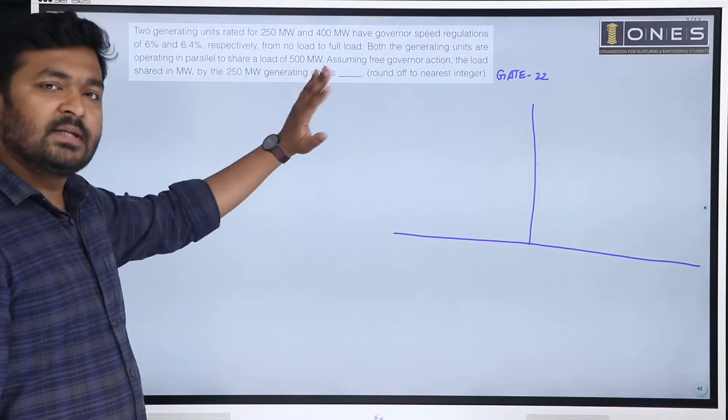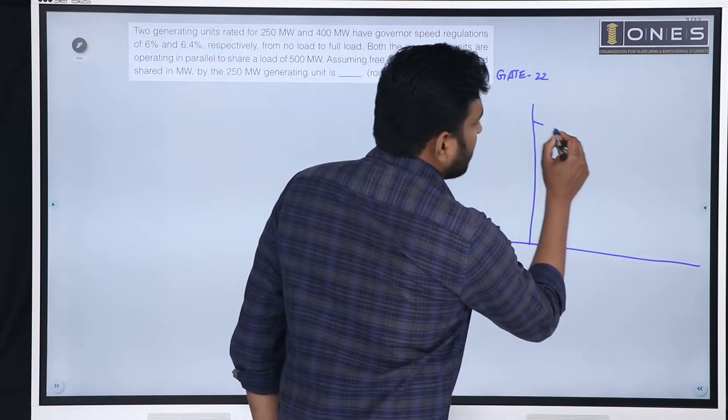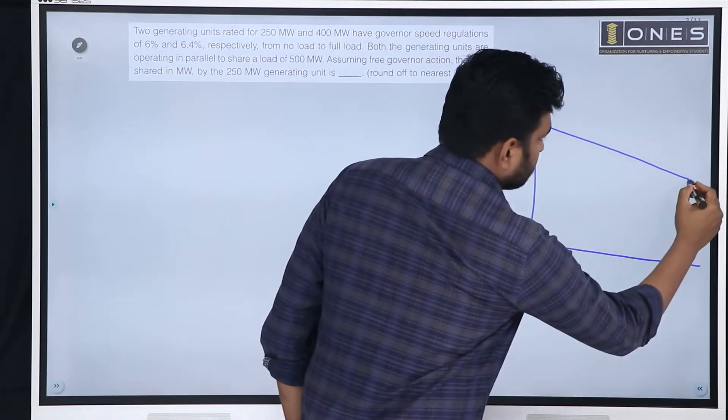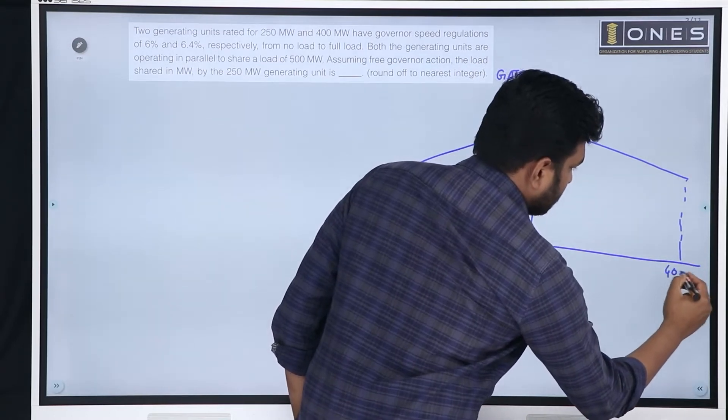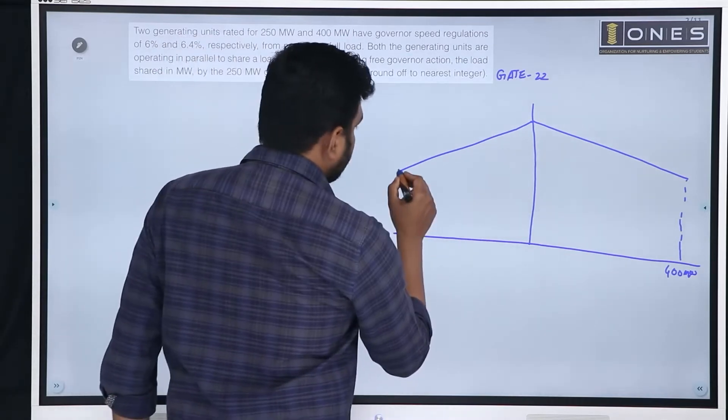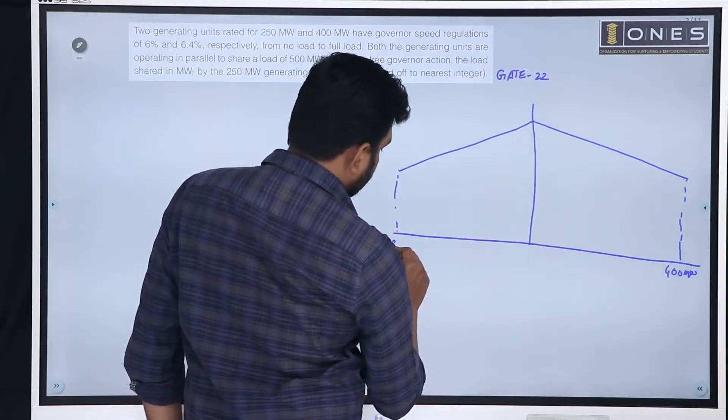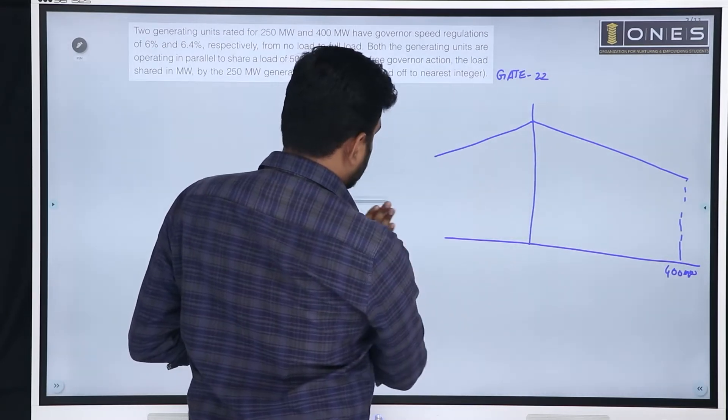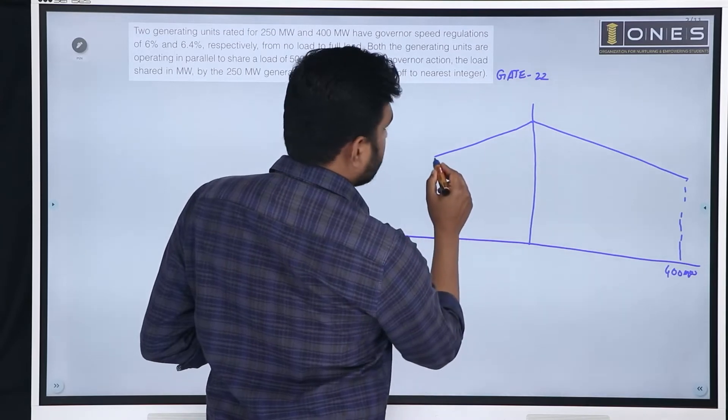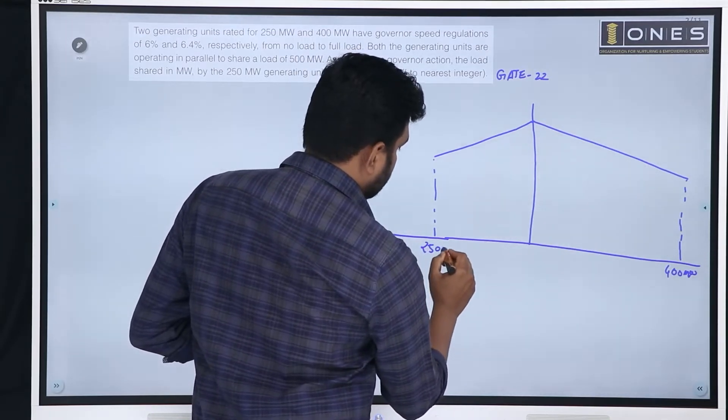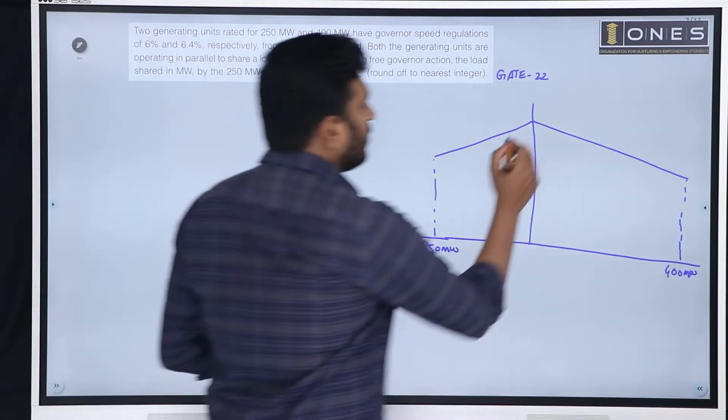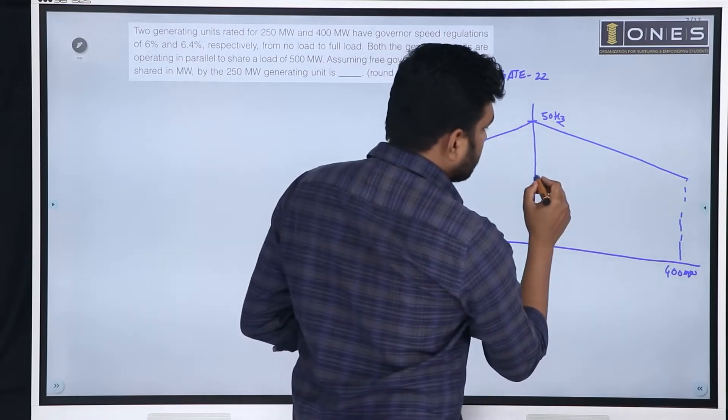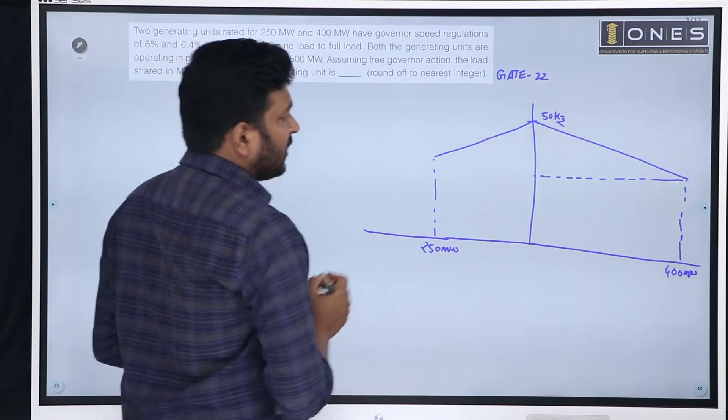We assume that no load frequency is the same for both the generators. Let us assume that this is 400 MW. No load frequency, we are assuming it as 50 Hz. Now, 400 MW is the full load frequency.